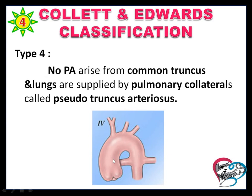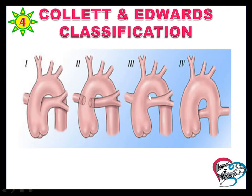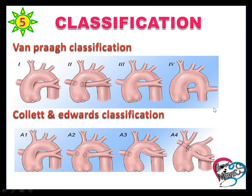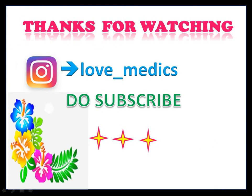Collett and Edwards Type 4: no pulmonary arteries arise from the common trunk, and the lung is supplied by pulmonary collateral circulation — that is, pseudo-Truncus Arteriosus. These are the four types of the Collett and Edwards classification. Thanks for watching.